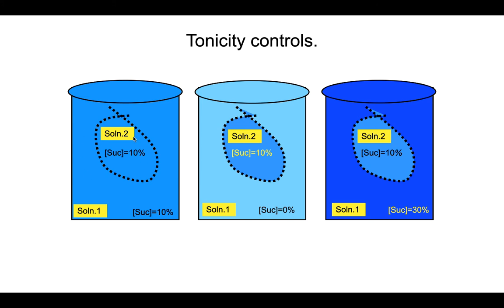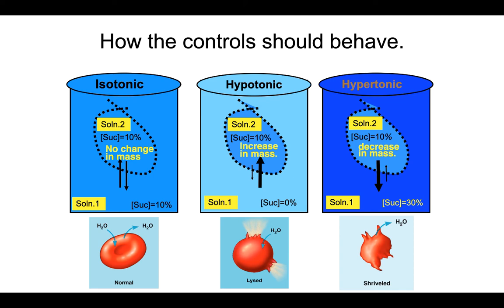After incubation, you will weigh the dialysis tubing again and figure out the net change in mass. Did they gain water, lose water, or was there no net change? It is through that net change in mass that you will be able to determine which solution was hypotonic, hypertonic, and isotonic. However, based on the information given, you should already know what you will see. For example, with 10% inside and 10% outside, those solutions are isotonic to each other, so the net change in water will be zero — no change in mass.